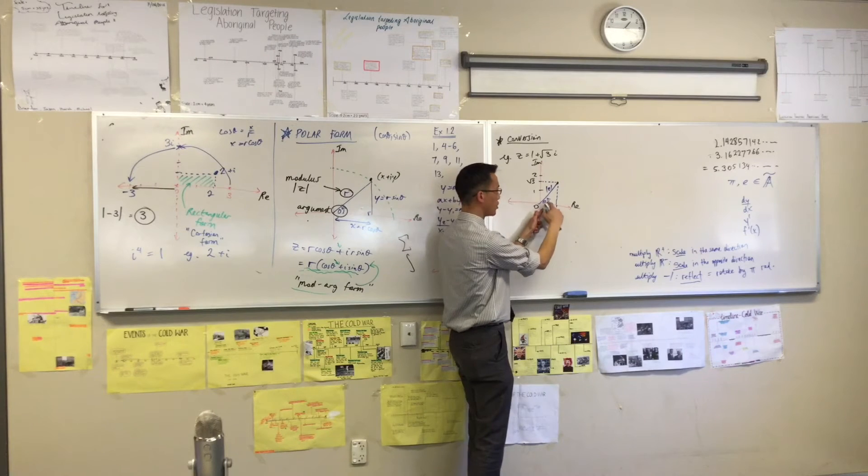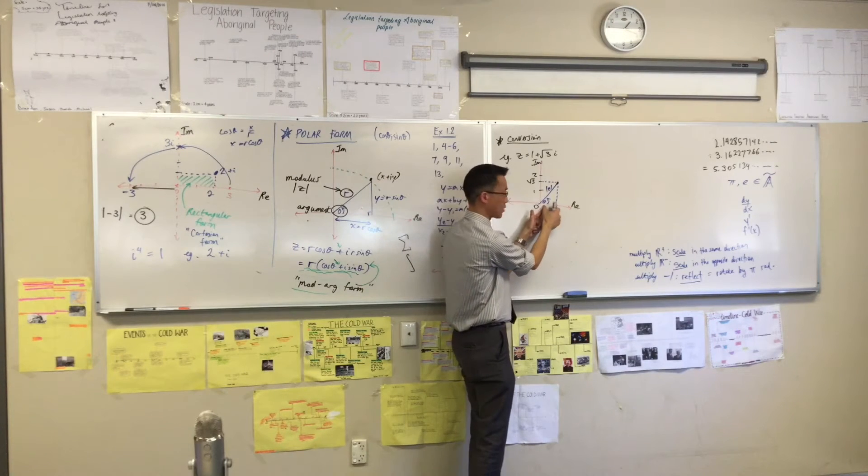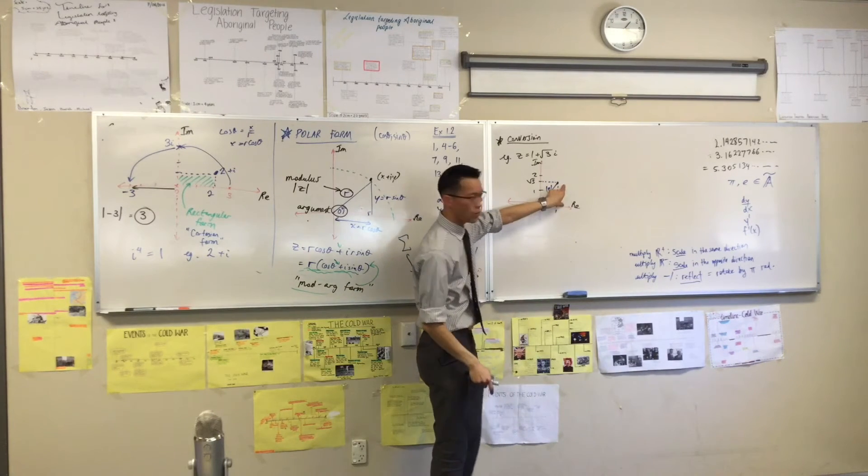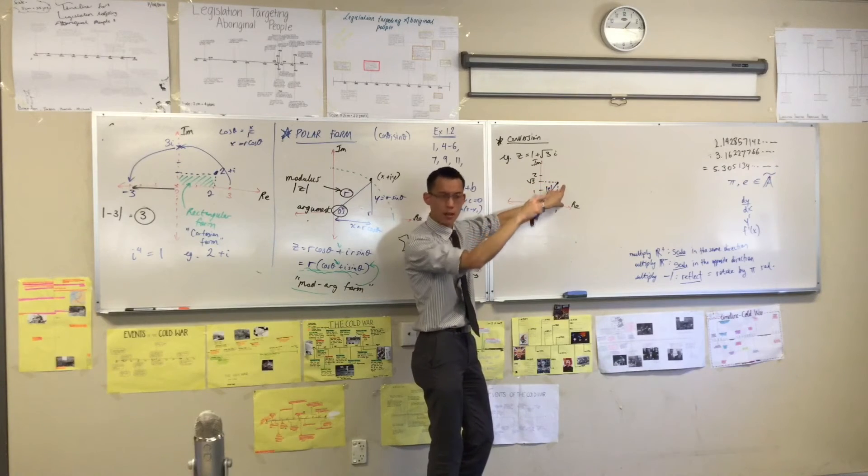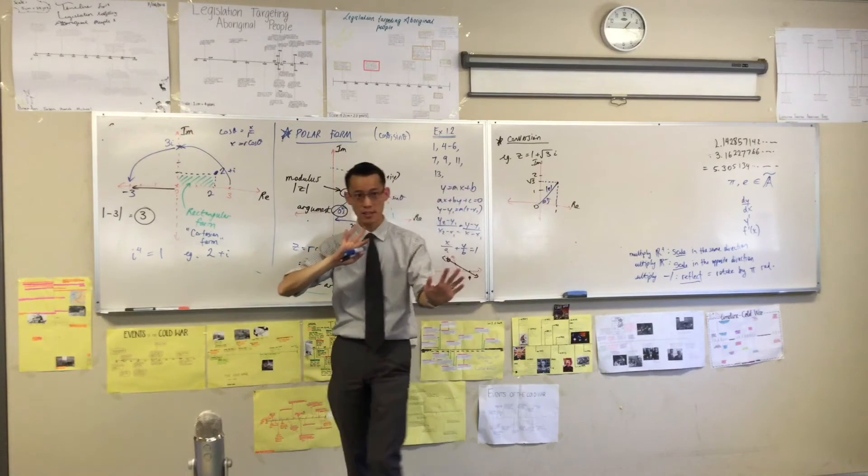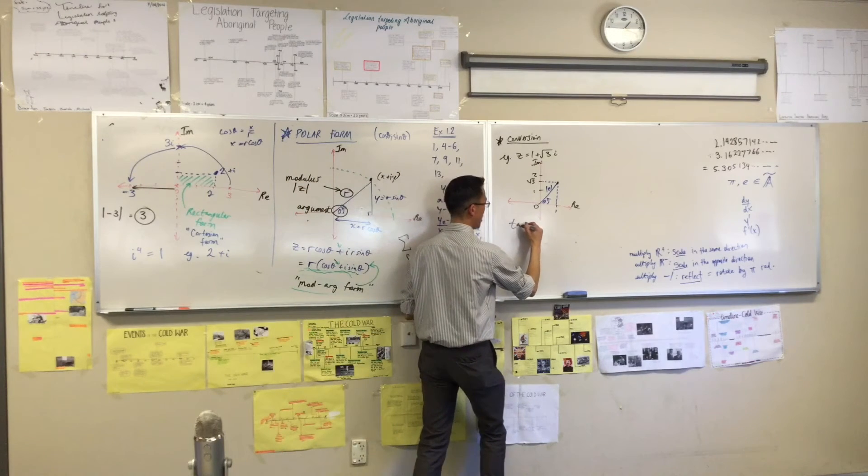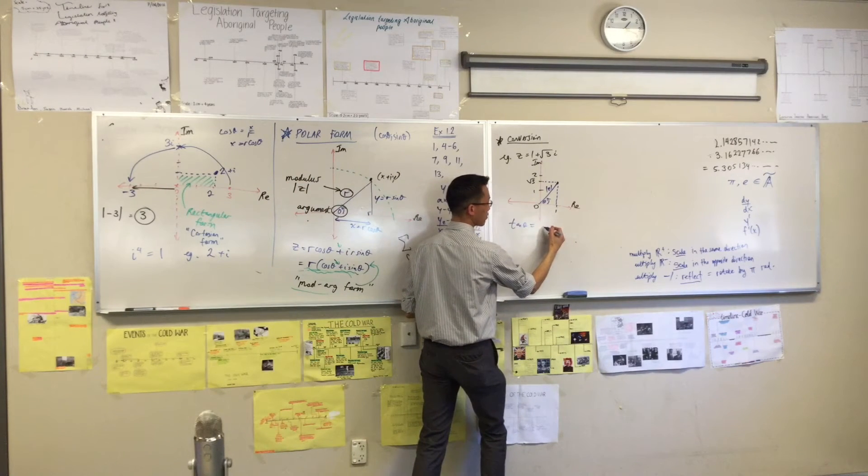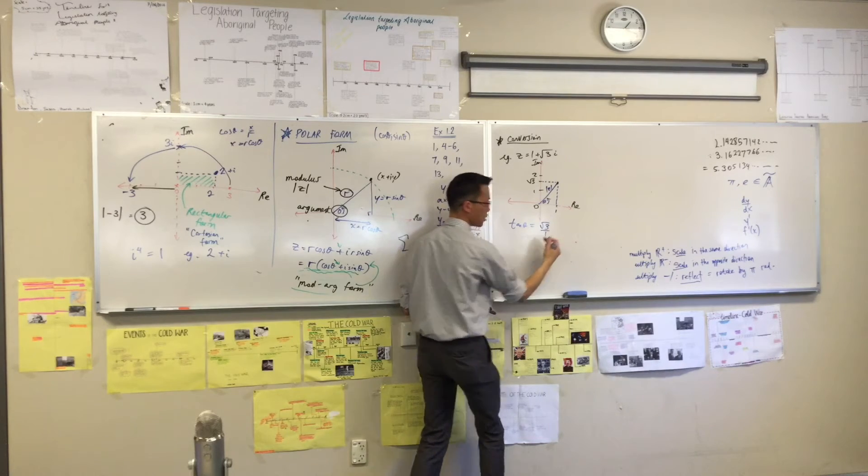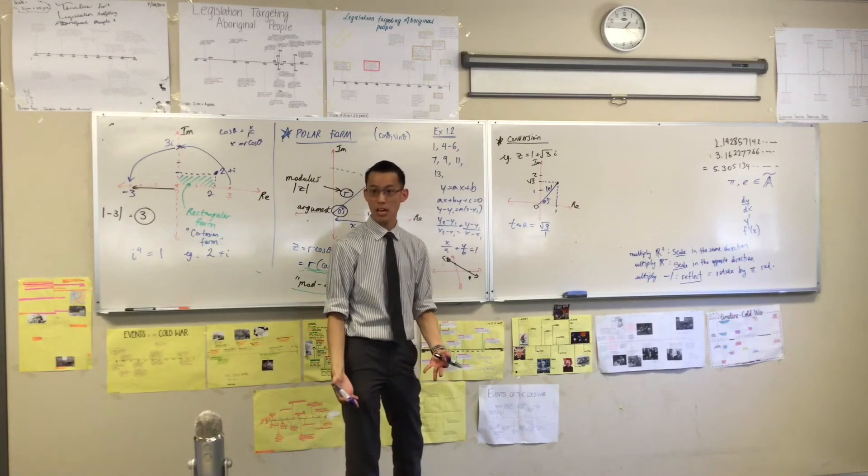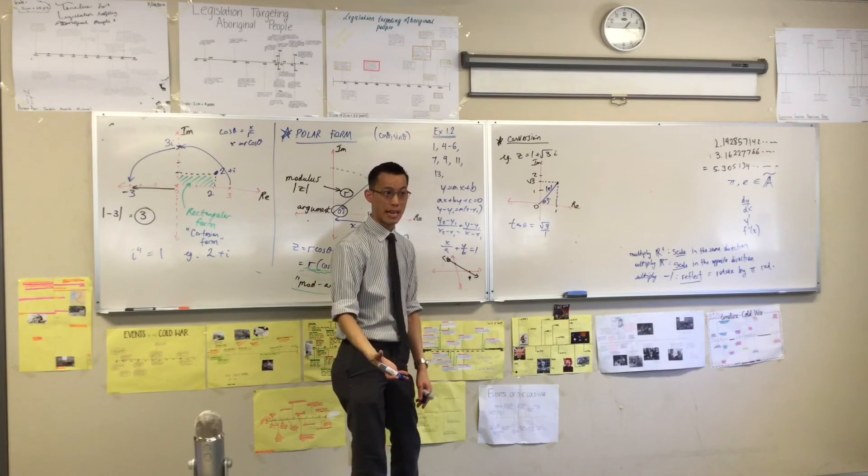So I can either go for the argument first, or for the modulus. If I've got both pieces, it doesn't matter which one I go for. If you want to go for the argument, then I can say, hey look. I have got this side here, which is adjacent to theta, right? That's 1. And then I've got this side here, which is opposite theta, which is root 3. So opposite adjacent, that means tan. So I would say tan theta equals opposite on adjacent. Are you happy with that?